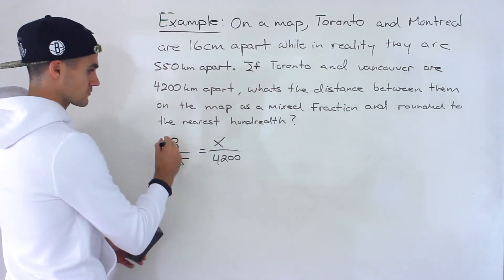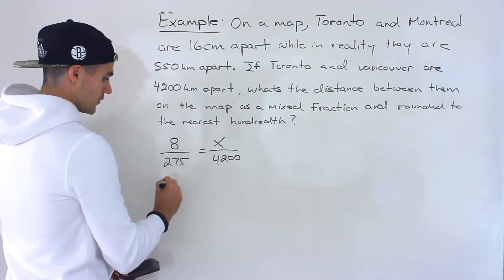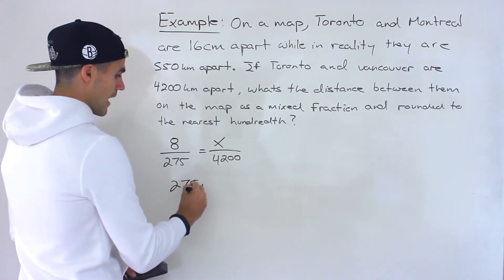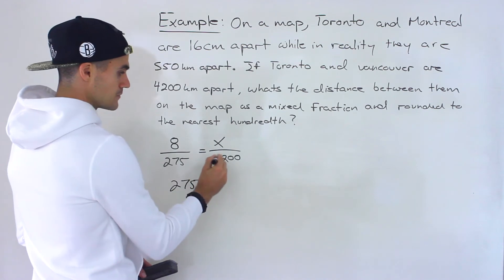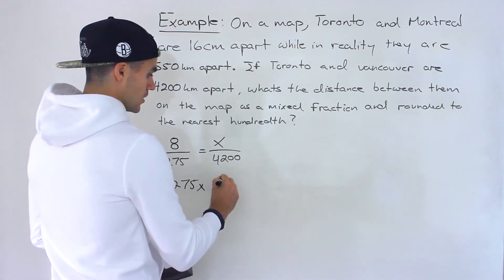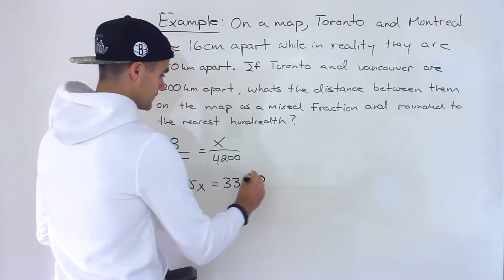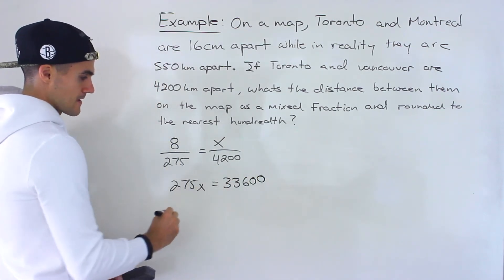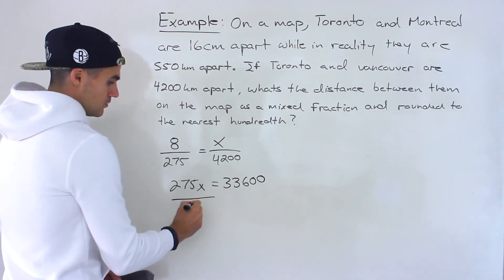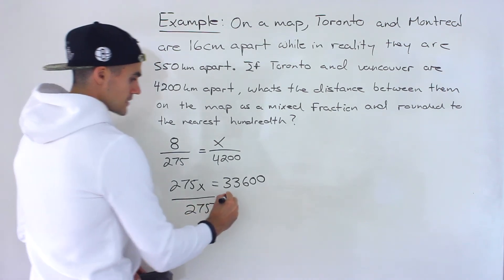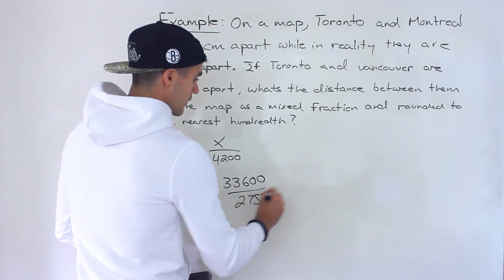And so from here cross multiplying we'll have 275x equals 8 times 4,200 would give us 33,600 like that. And now we can divide both sides by 275 to isolate for that x.